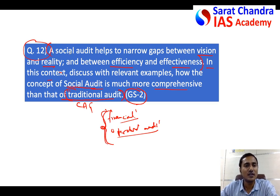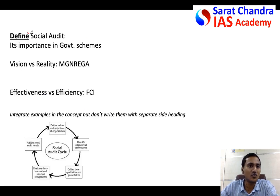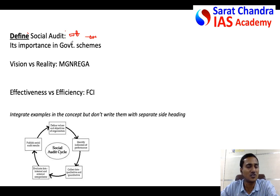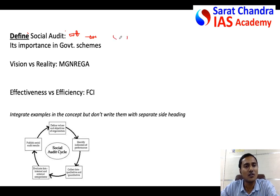In this kind of question, in the first few lines you have to define the keyword — social audit. Any question that revolves around a keyword, you define the keyword first. If you know the definition given by the World Bank or the Government of India, you can give it. But generally you can write the definition in your own language also — this is not Boyle's law where you must quote exactly. You can say that social audit comprehensively audits all the functions and functionalities of any corporate or government scheme.